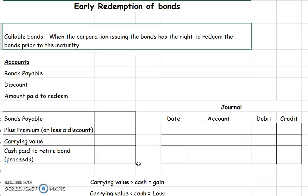But now we're going to say that our company has issued what we'll call callable bonds. Callable bonds means that we have the right to redeem them before the bonds mature if we desire.